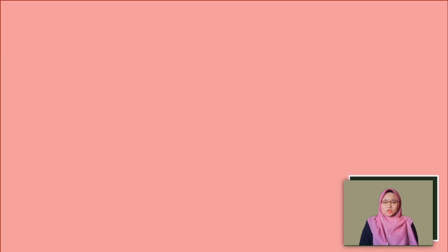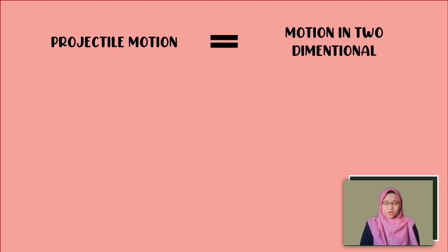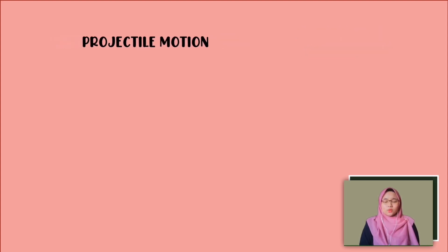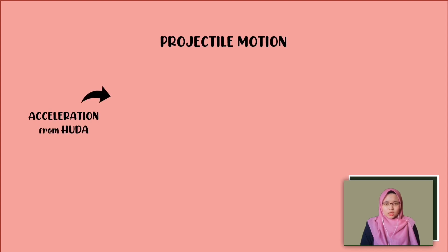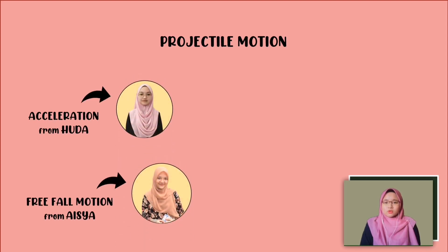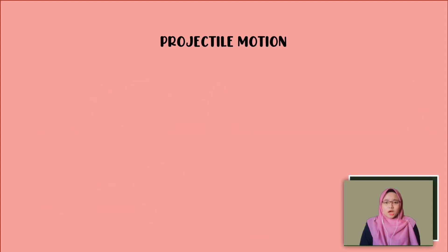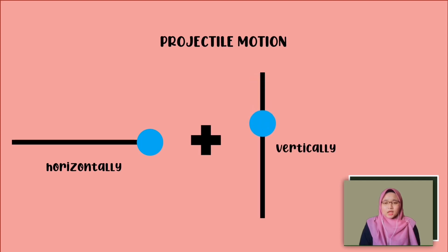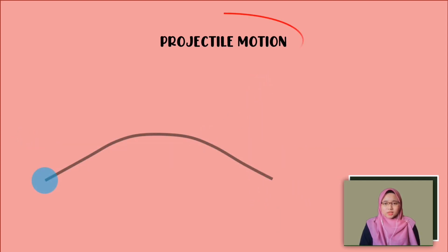Lastly, I will talk about projectile motion, or also can be called motion in two dimensions. Earlier we have listened about acceleration from Huda and free fall motion from Aisha. Both of them are in a straight line motion but in different directions. How about if an object experiences moving along horizontally but at the same time vertically? This kind of motion is called projectile motion. In this session, I will talk about the concept of projectile motion.